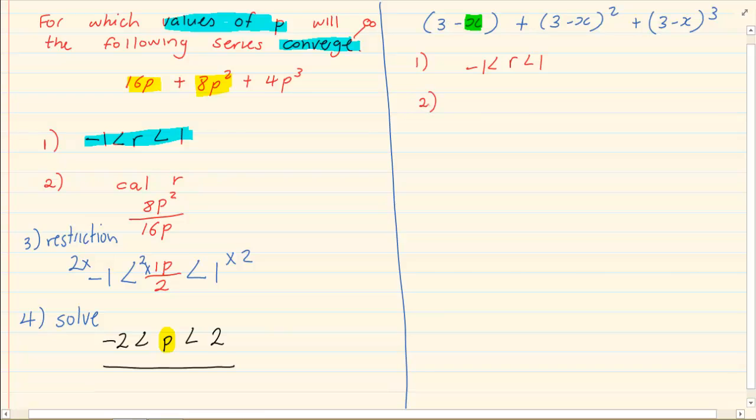Number 2: calculate r. In this case it is term 2 over term 1. Now by cancellation we will see that r is equal to 3 minus x.